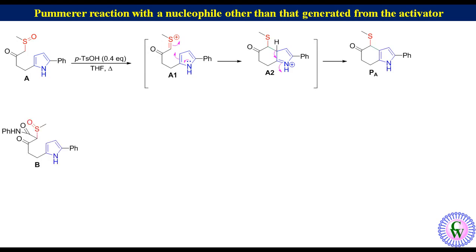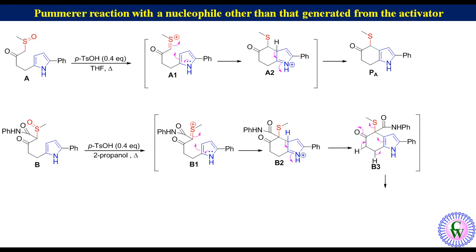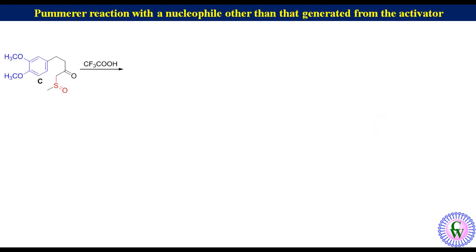When sulfoxide B with an electron-withdrawing amide group is heated in the presence of para-toluenesulfonic acid in 2-propanol, it generates intermediate B1 with an alkylidene sulfonium ion as an electrophile, which undergoes cyclization to generate intermediate B2. Aromatization of the pyrrole ring in B2 by deprotonation gives B3, which undergoes aromatization of the six-membered ring by enolization of the keto group and removal of thiomethanol to produce indole derivative Pb.